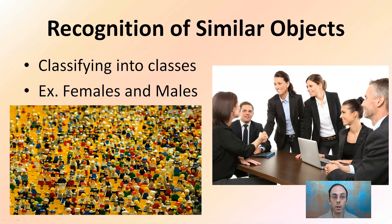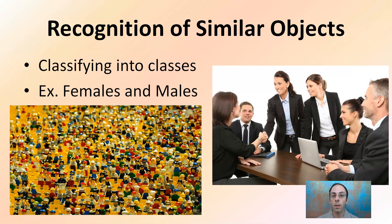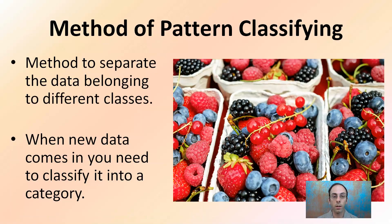Also, classifying similar objects into different classes or subgroups. For example, with a large population looking at males versus females — that's one way of classifying people in an image. We could be looking at a whole multitude of ways of recognizing similarity of objects.